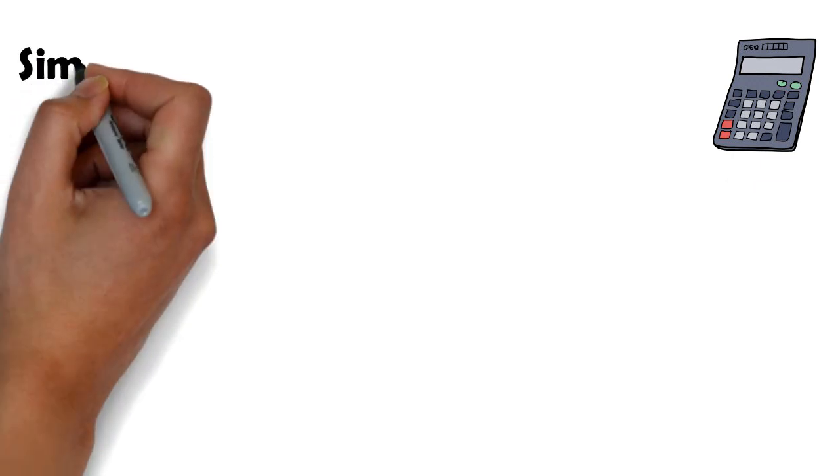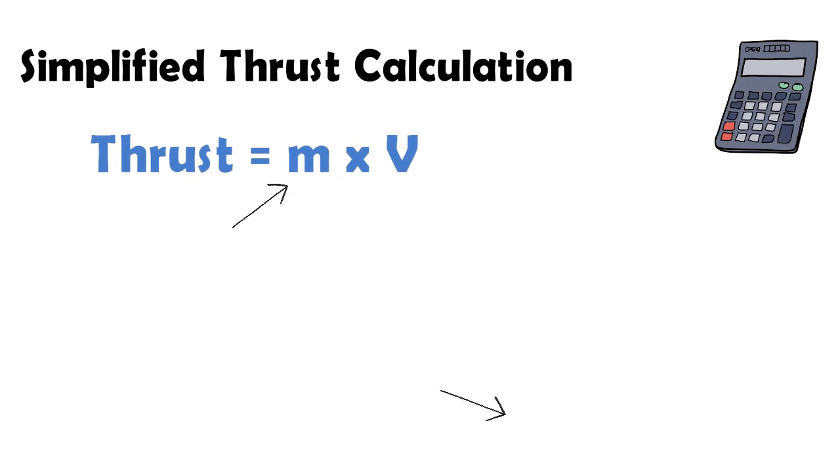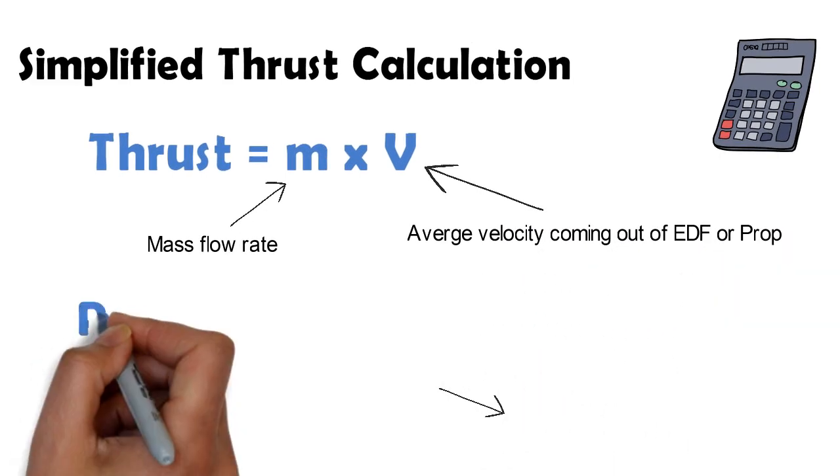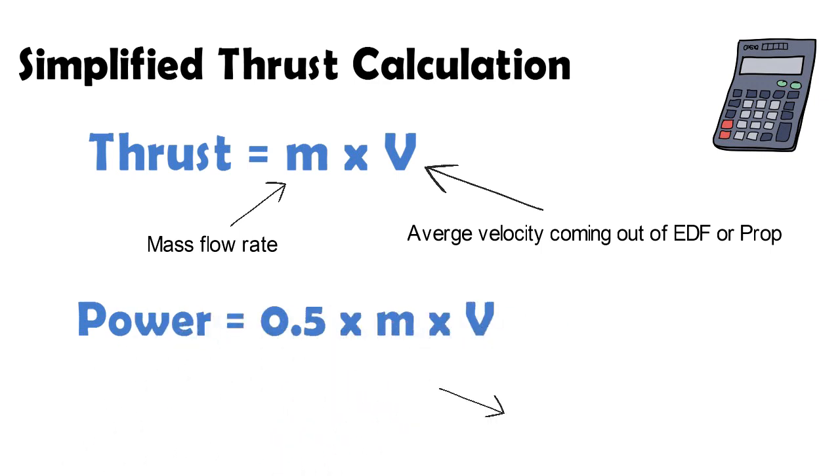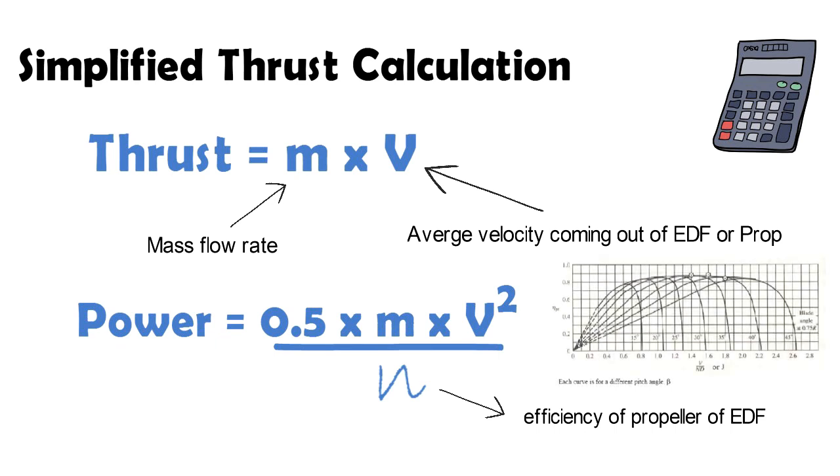Now for attaining this thrust we can use electric ducted fans or open propellers as mentioned earlier. If we know the average outflow velocity of the ducted fan or the propeller, we can easily calculate the thrust it produces through the simplified formula: F equals mass flow rate times the velocity. Bear in mind the velocity here is the average outflow velocity. We can also find the minimum power required by the electric ducted fan or the propeller through the following formula, which is: power is equal to nu times half times the mass flow rate times the square of the velocity, where nu is the efficiency which will depend upon the type of propeller. The efficiency of an open propeller is about 70 to 80 percent. This efficiency value is the ratio of the energy consumed by the motor to the energy imparted to the air.